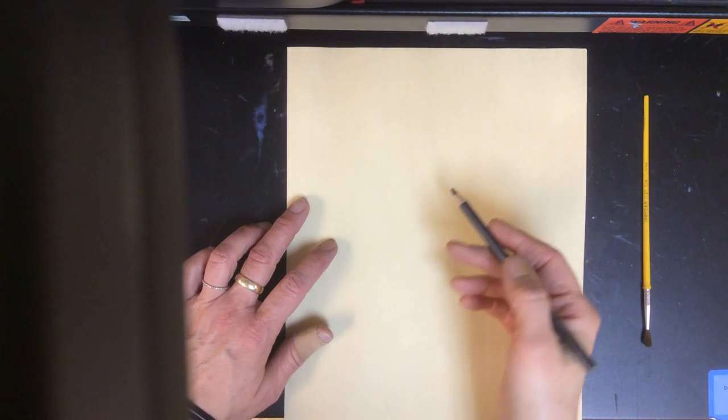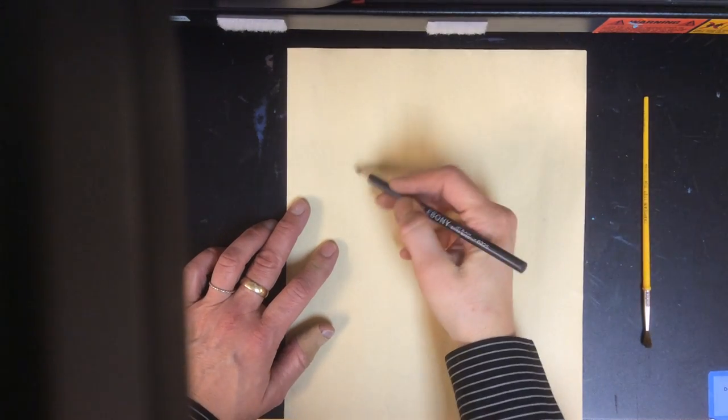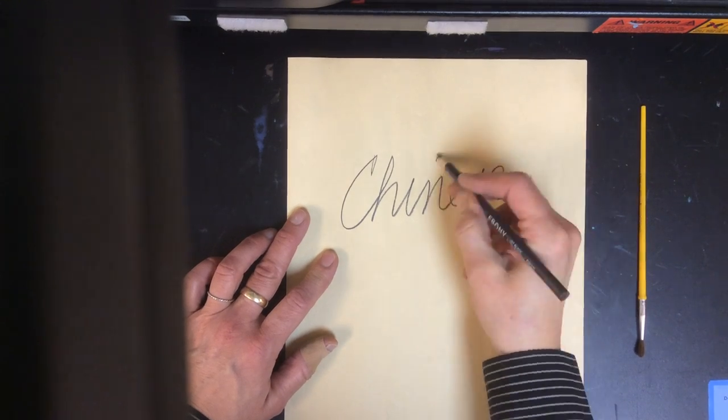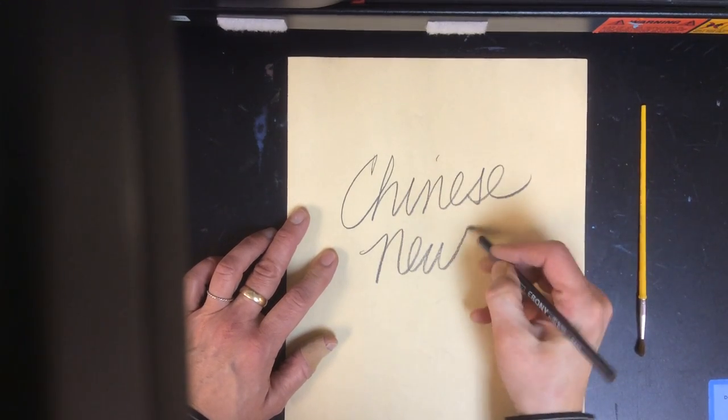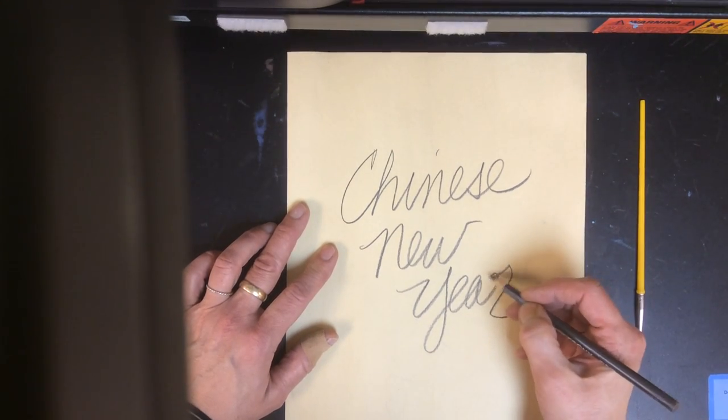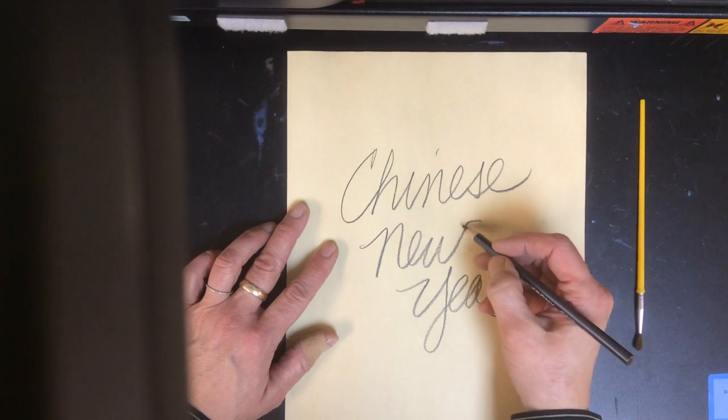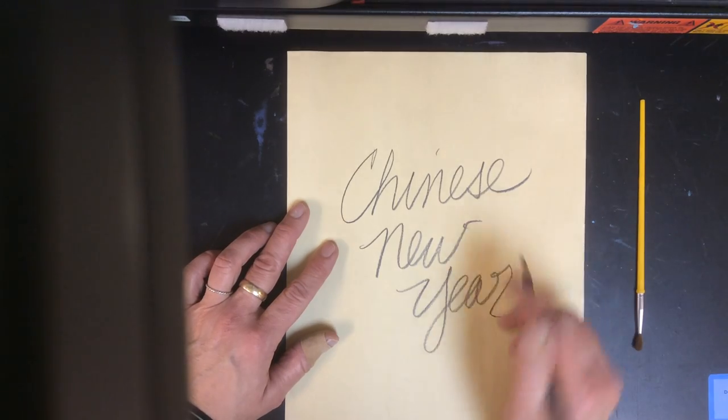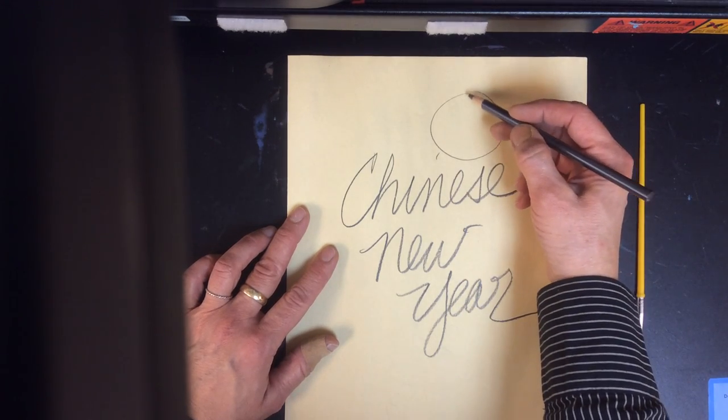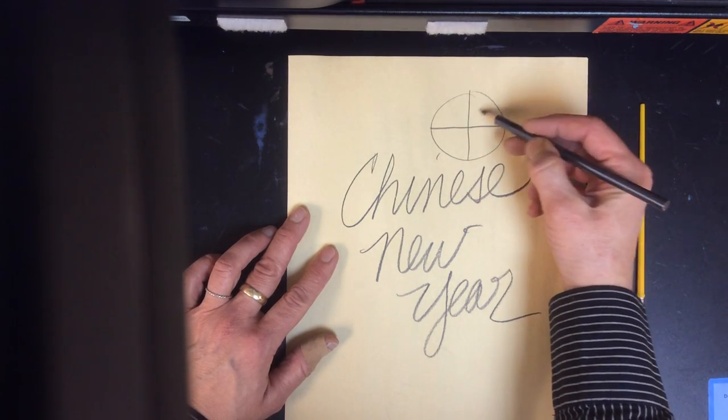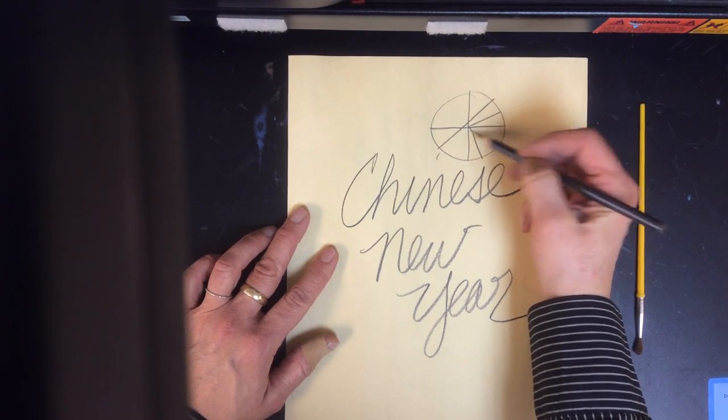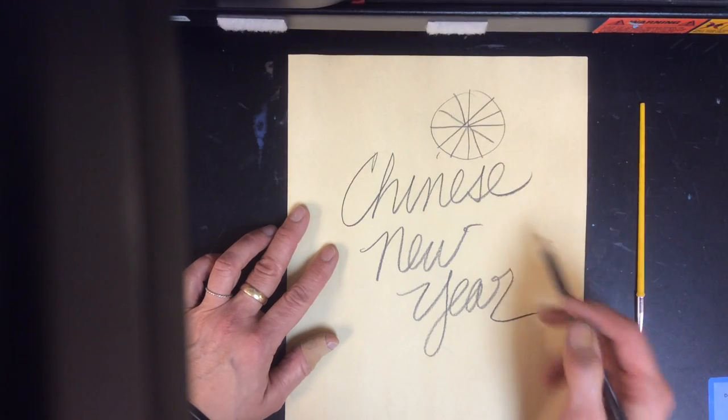Hi class, we are going to do a project today that has to do with Chinese New Year. As we have talked about in years past, every year is a new theme for Chinese New Year based on the Chinese zodiac that has 12 different animals.